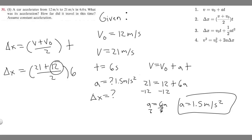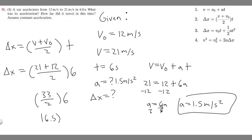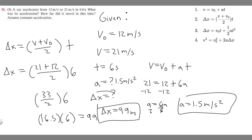21 plus 12 is 33, divided by 2 gives 16.5, and multiplying by 6 gives 99. So Δx equals 99 meters. That's how far the car traveled, and that's how you solve this problem.